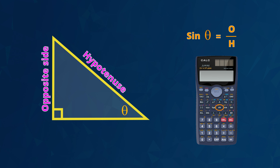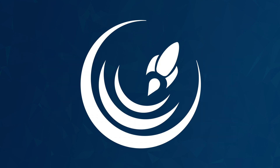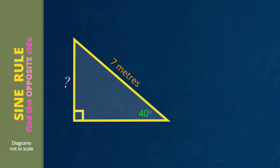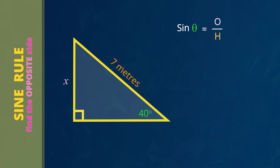Now we're ready to see examples of how the sine rule is used. In this first example, we will calculate the vertical height of this slope — that's the opposite side, which we mark with an X. The two things we already know are the angle of 40 degrees and the length of this hypotenuse of 7 meters. The first step is to write the sine rule: sine theta equals the opposite side divided by the hypotenuse.